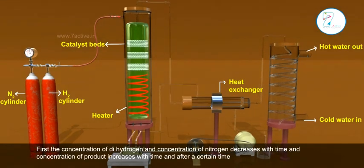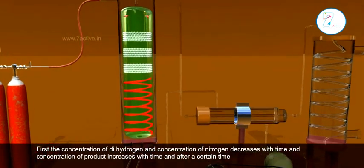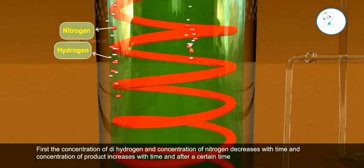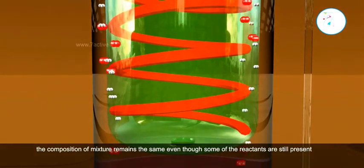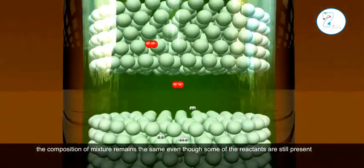First, the concentration of dihydrogen and nitrogen decrease with time, and concentration of product increases with time. After a certain time, the composition of the mixture remains the same even though some of the reactants are still present.